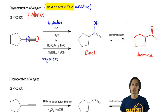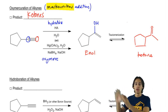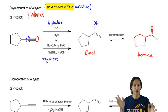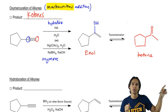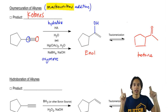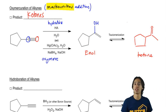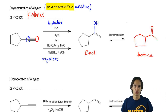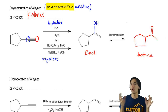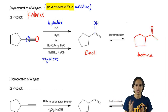What part of this mechanism should you be able to draw? The first part. For the second part, you're fine to just label it 'tautomerization' and then draw the product. I'm not going to teach you the full mechanism until Orgo 2, but you know at least the general idea of what's going on.